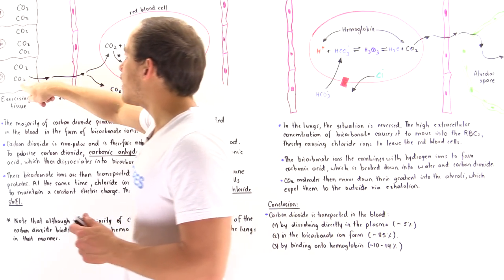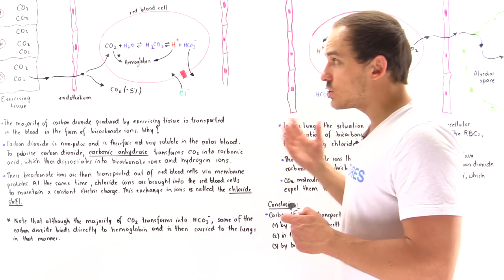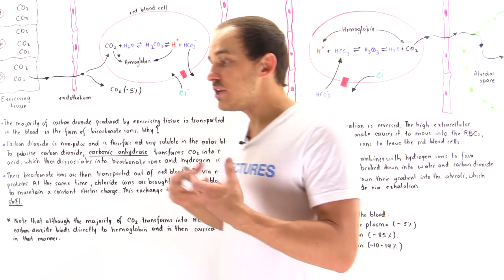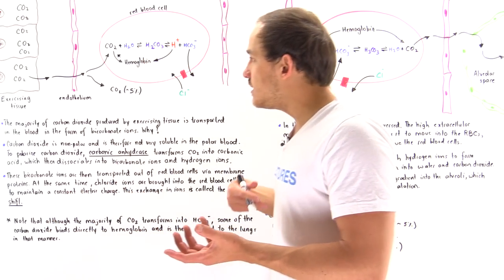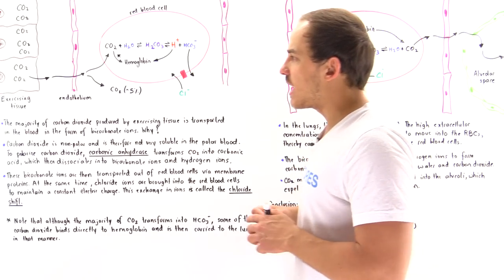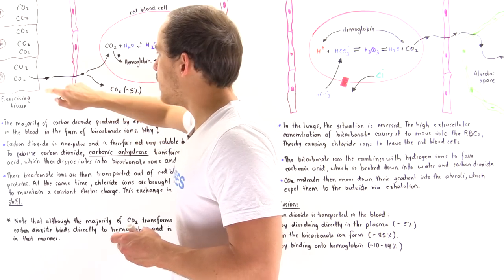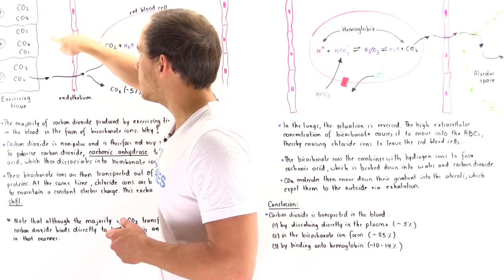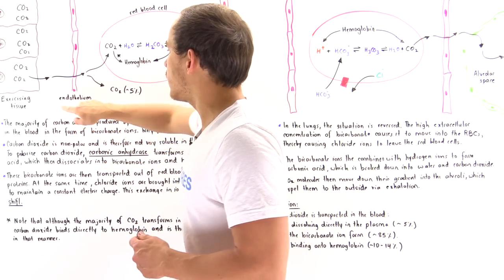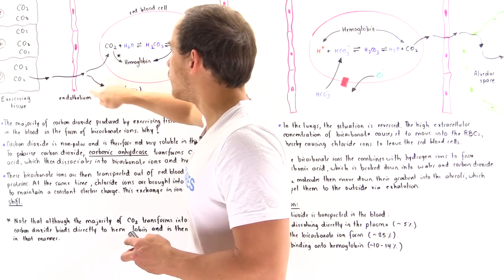These non-polar carbon dioxide molecules, because they have no charge, can easily move across the cell membrane. The CO2 molecules make their way across the cell membrane into the interstitial space, then across the endothelium and into the blood plasma.